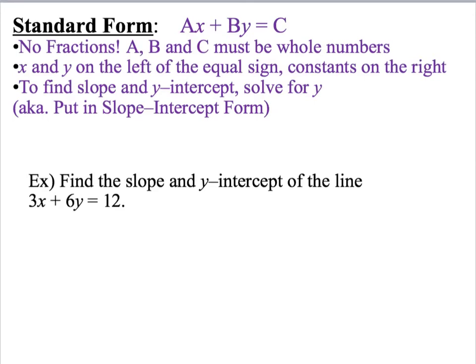Now let's talk about standard form, which is Ax plus By equals C. So in standard form there are no fractions. A, B, and C must all be whole numbers. Also in standard form, the x and y terms are going to be on the left side of the equal sign, the constants are going to be on the right side of the equal sign.